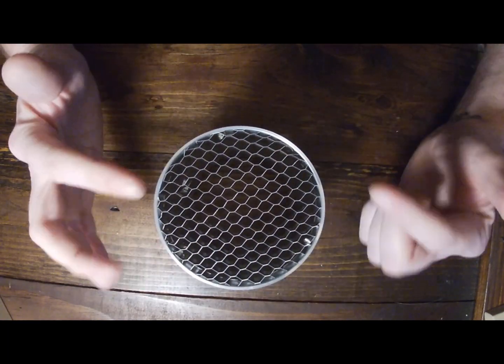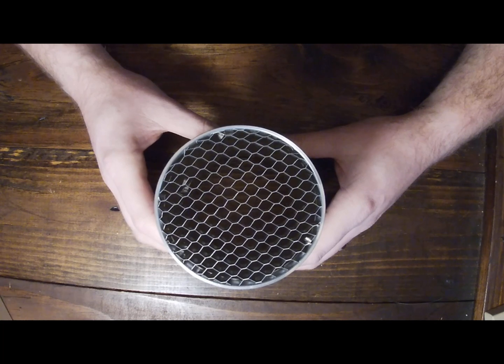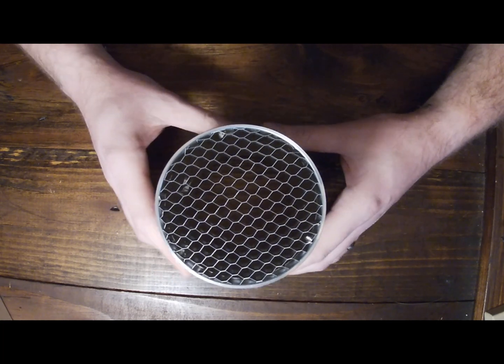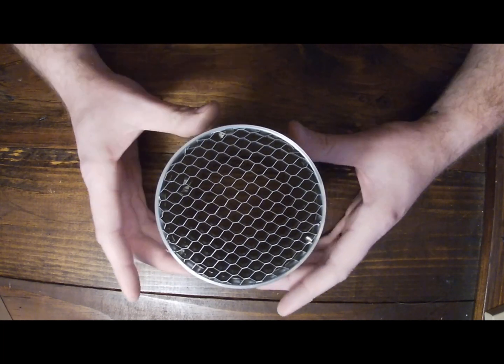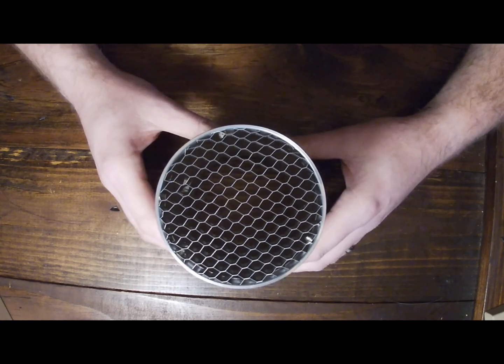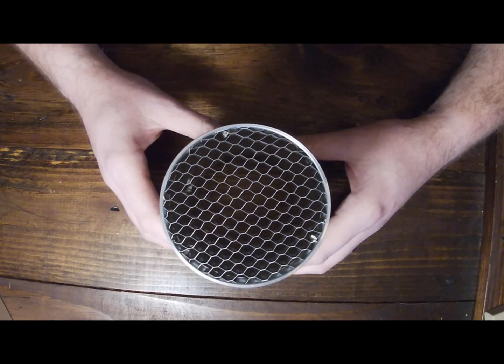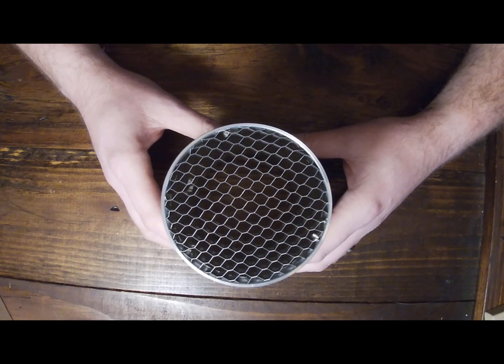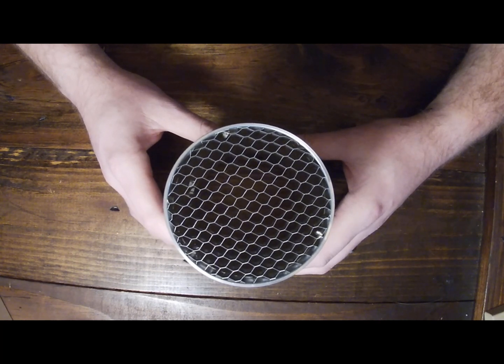Now once you're happy with the fit, we need to figure out the best way to secure the screen in place. Now this is all personal preference and it all depends on your build. Some people like the friction fit. Other people use an epoxy or sealant, but we choose to rivet our screens in place so that we know they're always going to stay in their proper orientation.